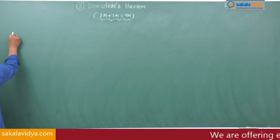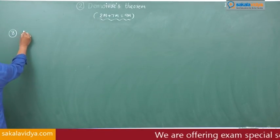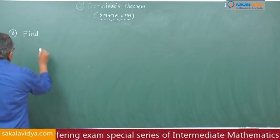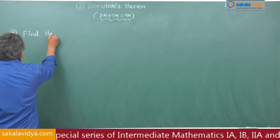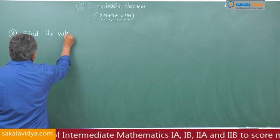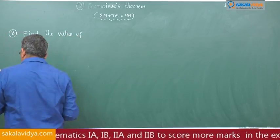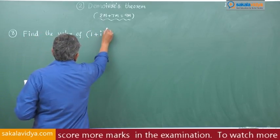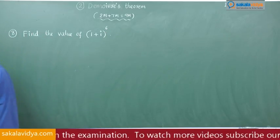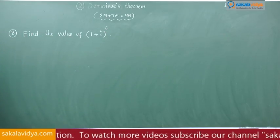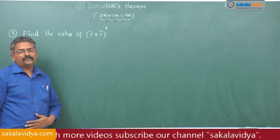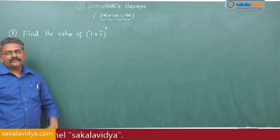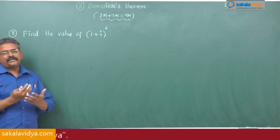Next, Problem 8: find the value of (1 + i)^6. We have to find out the value of 1 plus i to the power of 6. Whenever we come across these kinds of problems, it is better to change it to the polar form.